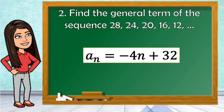You may check if the general term or the nth term is correct by using one of the given terms of this sequence. You may use the second term, third term, fourth term, or fifth term.